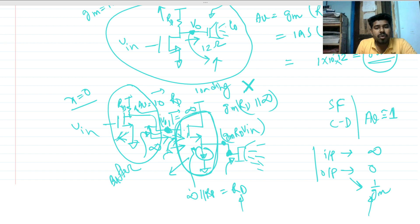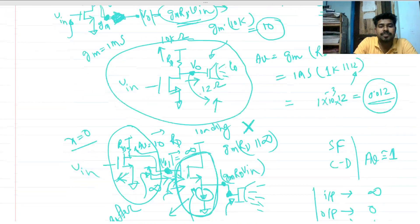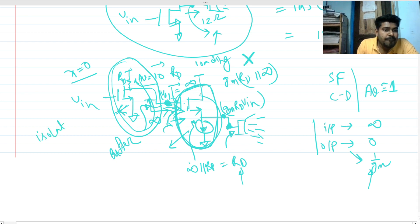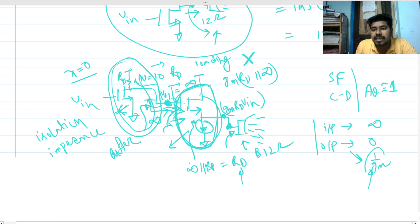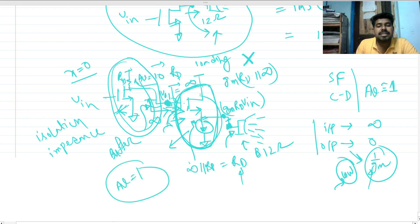This is how the common drain (source follower) amplifier is used in practical circuits. It also serves for isolation and impedance matching — isolating the CS stage from the load, and matching the low output impedance (1/GM) to the low load impedance (e.g., 12 Ω) of the loudspeaker.